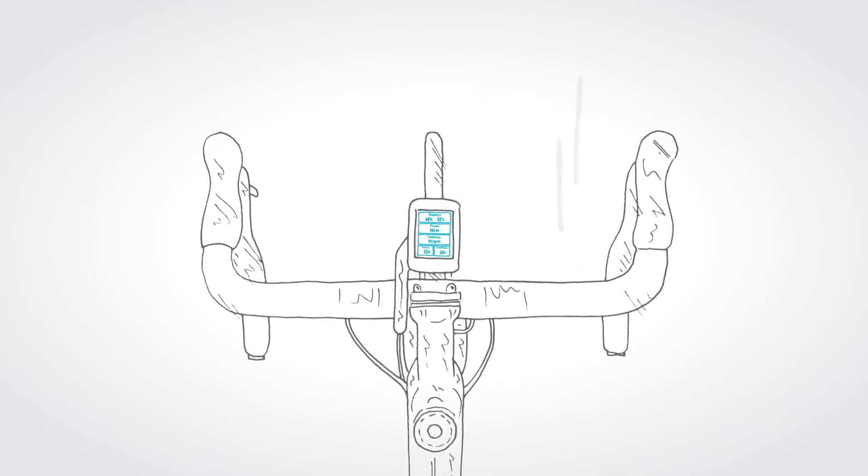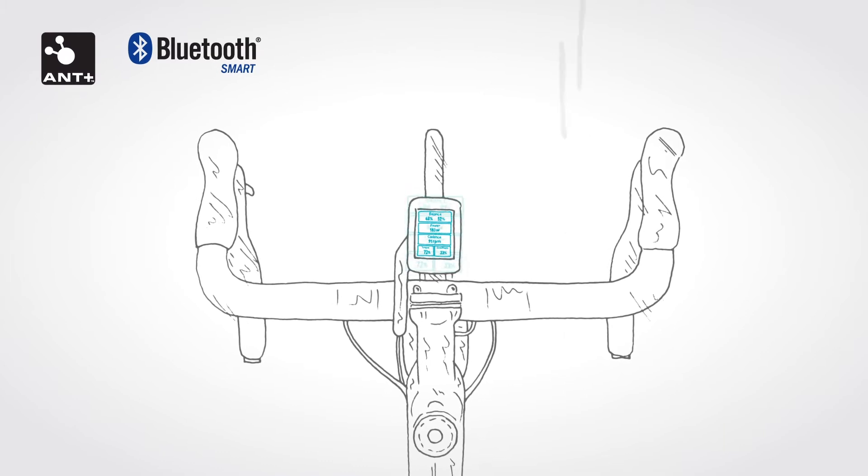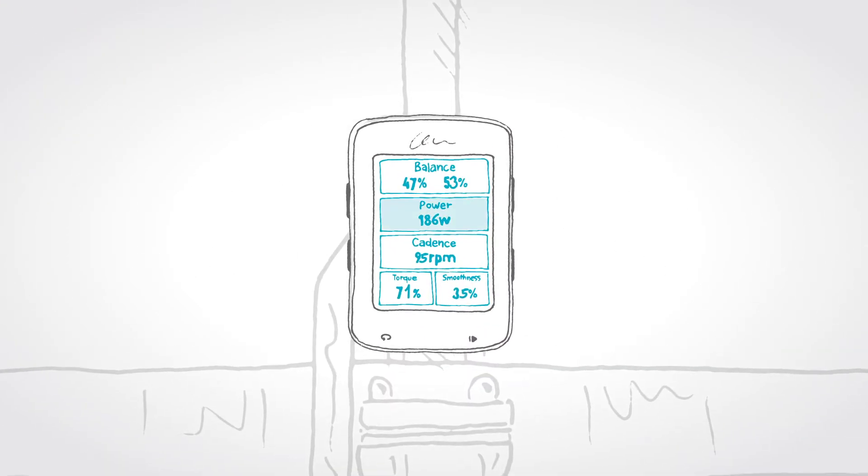PowerBeat is compatible with a wide range of ANT Plus and Bluetooth devices, as well as a wide range of head unit apps. You will be able to see, monitor, and capture your power, cadence, left-right balance, and on ANT Plus devices, torque efficiency and pedal smoothness as well.